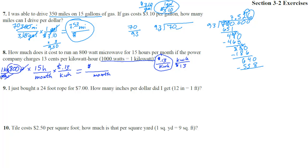This one will be the easiest one to do: 800 divided by 1,000. Dividing by 1,000, you go 1, 2, 3. So that's 0.8. The kilowatts cancel the kilowatts, and the hours cancel the hours. We have 0.8 times 15 times 0.13. Let's do that.